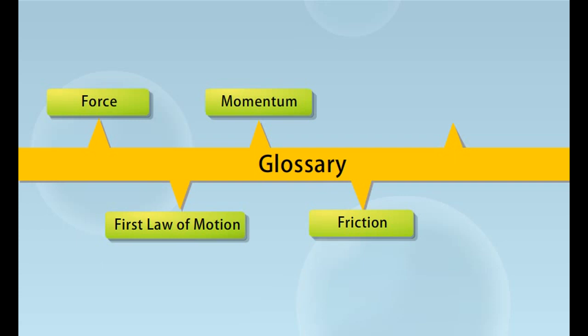An object will be in the state of rest or in motion until external force acts on it. The mass of the object is a measure of inertia. Force of friction always opposes the motion of objects.